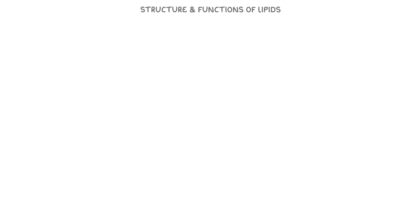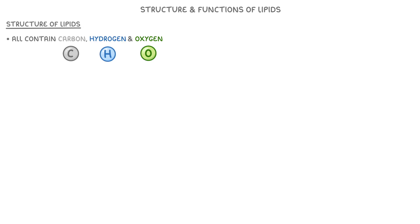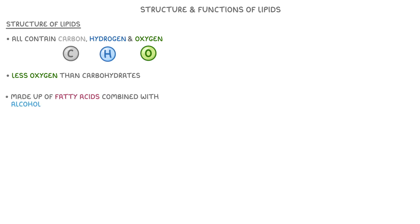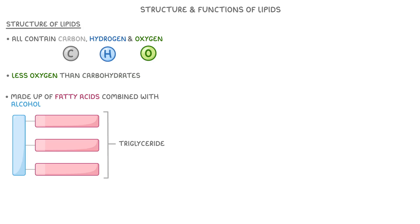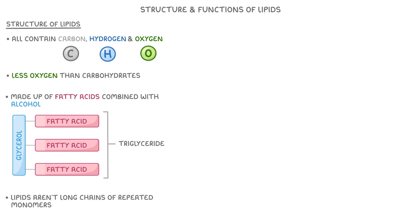Let's begin by looking at the structure and functions of lipids. Starting with structure, they're an important group of molecules that all contain carbon, hydrogen and oxygen, but it's worth noting that they have much less oxygen than carbohydrates do. Most lipids are made up of fatty acids combined with an alcohol. For instance, this triglyceride is a lipid that contains three fatty acid tails linked to the alcohol glycerol. But some lipids have other structures and even have extra elements too. Remember that lipids aren't long chains of repeated monomers, so they aren't technically polymers.